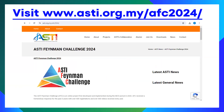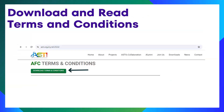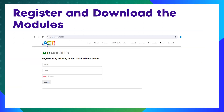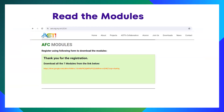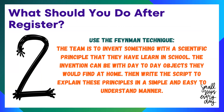You can view the webpage and download easily. Download the terms and conditions, go through and read them. You can fill in your name and download the modules. Read the modules and you can go into making a good video. Step two: after going through the modules, use the Feynman Technique. How to use it?